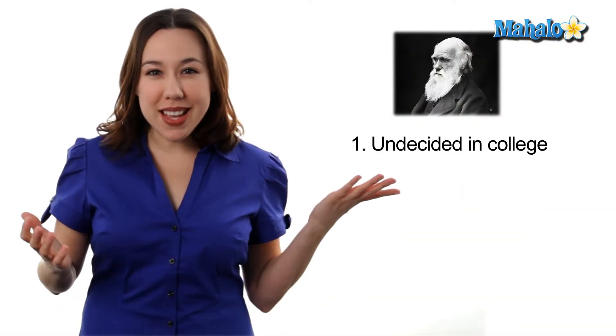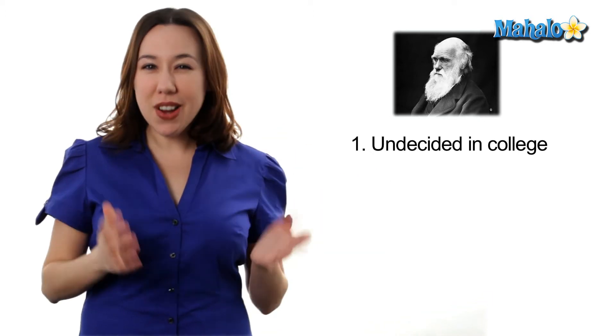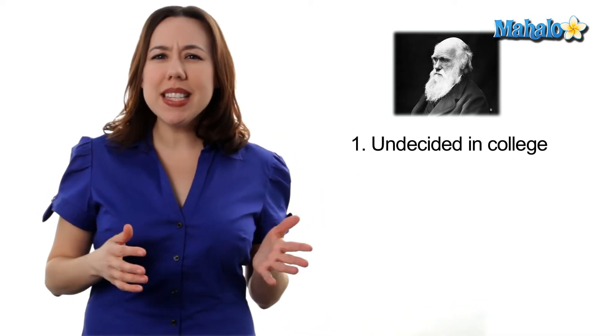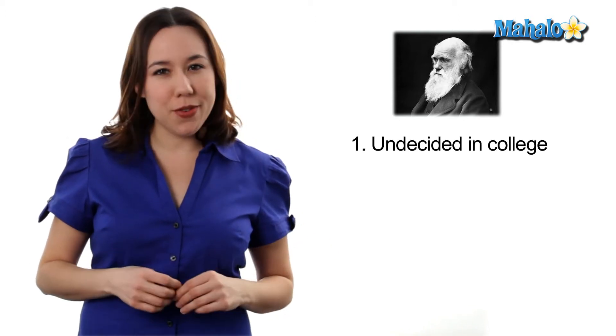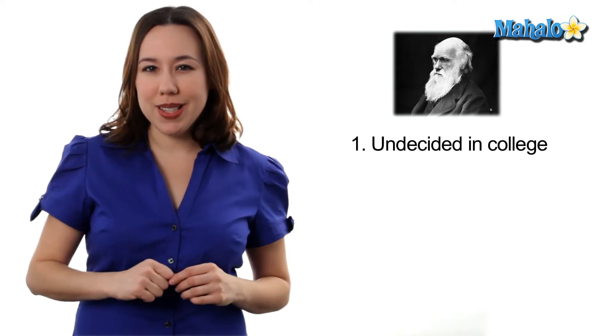Number 1. Darwin was undecided about college, too. He started out as a doctor, but then decided maybe he wanted to be a clergyman. Well, we all know, lucky for us, that he decided to be a naturalist.